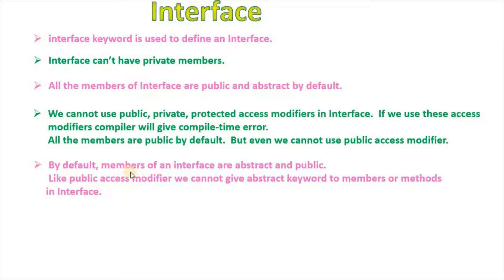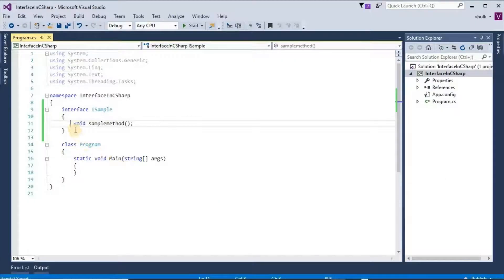By default, members of an interface are abstract and public. Like the public access modifier, we cannot give the abstract keyword to members or methods in an interface. We cannot use the public access modifier, and similarly we cannot use the abstract keyword.